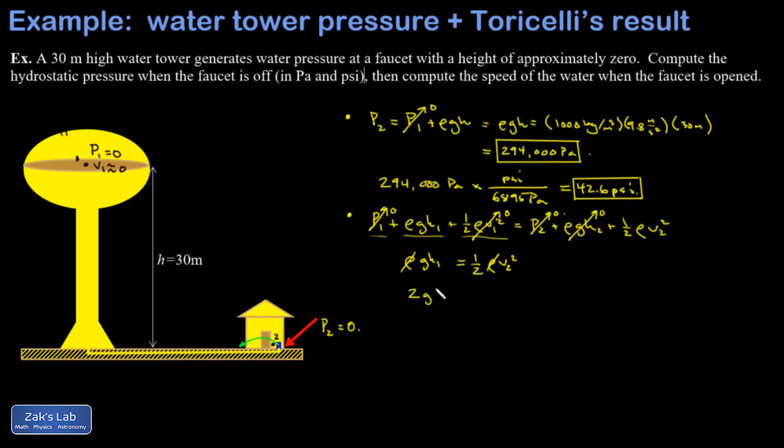And I end up with 2gh1 is equal to V2 squared. In other words, the speed of the water coming out of that faucet is the square root of 2gh1.